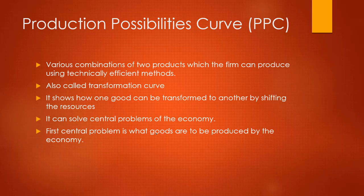The production possibility curve is the various combination of two products. To plot it you need an x-axis and a y-axis. On both axes we plot different products — different products a firm, institution, or country can produce using technically efficient methods. Then we find the suitable efficient point at which both products can be produced efficiently.